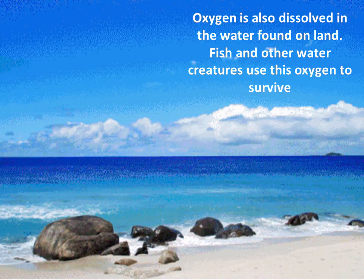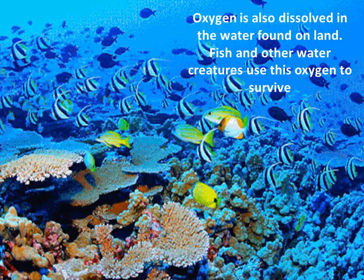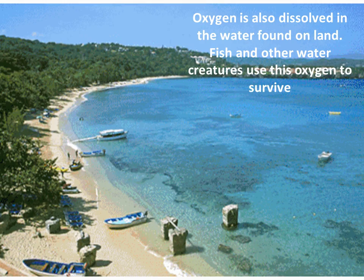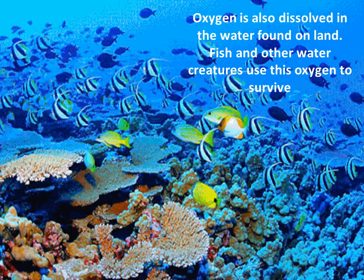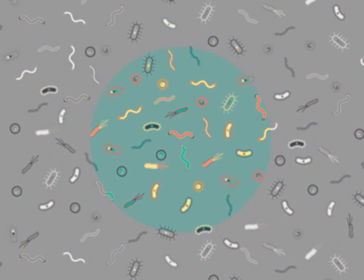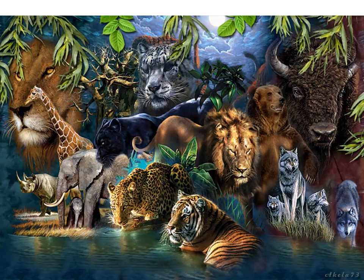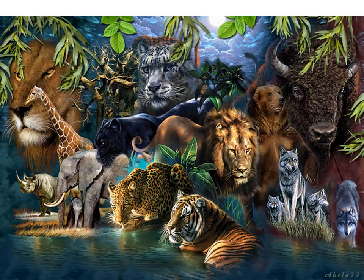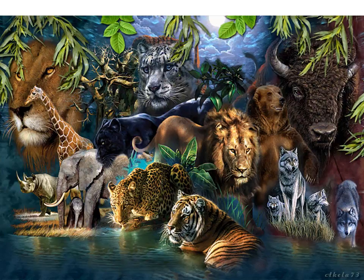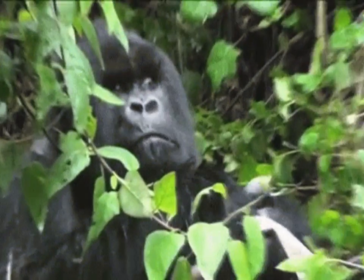Now let us understand the fourth domain of the earth and that is biosphere. The biosphere is the part of earth's surface and atmosphere in which plants and animals can live. Living things from the smallest ones that we cannot see to the big plants and animals have their own special type of environment in which they can live and grow. This is called their habitat. The earth has many different kinds of habitats, and the great variety of life on earth exists in these different habitats. So, the biosphere overlaps the lithosphere, atmosphere and hydrosphere.